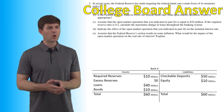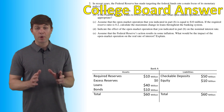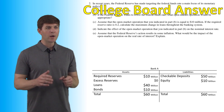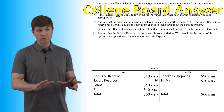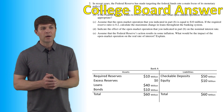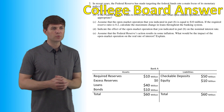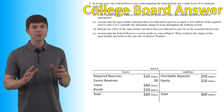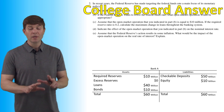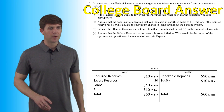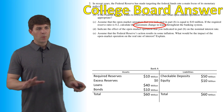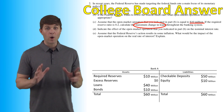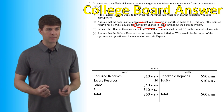Part C says: assume that the open market operation indicated in Part B — buying bonds — is equal to $10 million. If the required reserve ratio is 20%, calculate the maximum change in loans throughout the banking system. So we want to see what the impact on loans is from this $10 million open market operation.